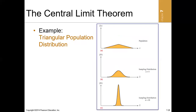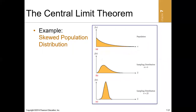Looking at more visual examples: a given population distribution, when you pick a sample size of five and draw the sampling distribution it looks more bell-shaped, and with a sample size of 30 it looks even more normal. Another example shows sample sizes of four and 25 — the sample size of 25 looks much more normal than that of four.